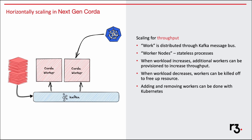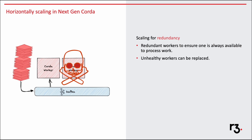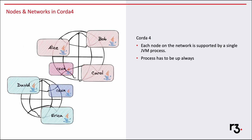Adding and removing workers can easily be done by Kubernetes, which is basically a preferred deployment strategy for Next-gen Coda. Here we have two workers. If any worker dies for some reason, its load is taken up by the other worker. Of course, the throughput can decrease in such a situation. In Coda 4, a process has to be up for the node to be available, regardless of whether it's processing any flow or not.